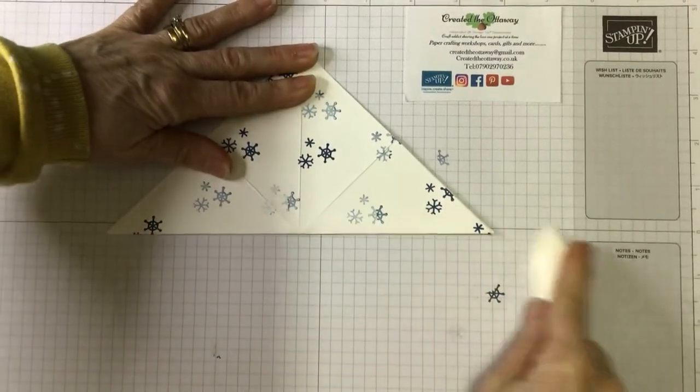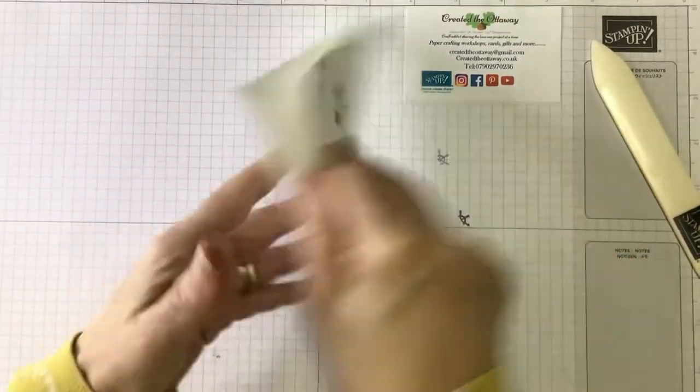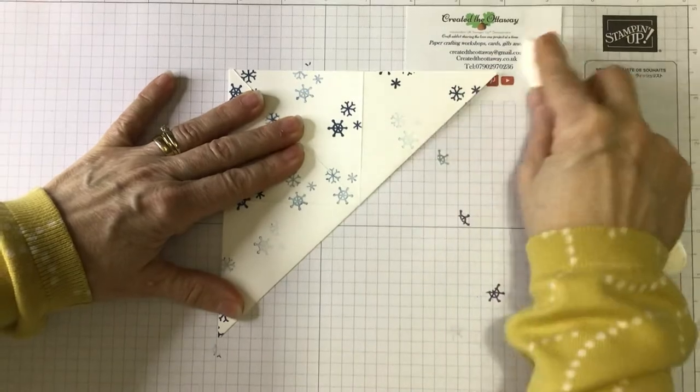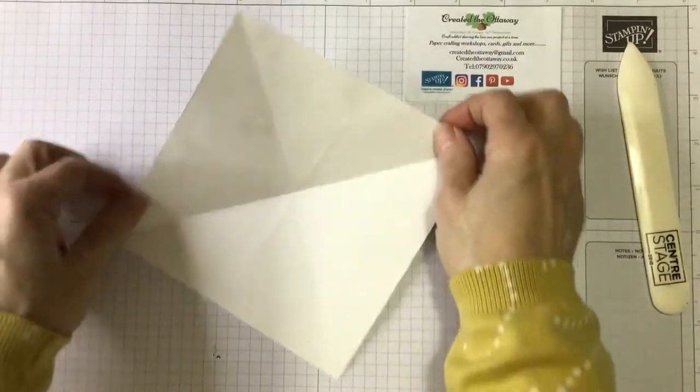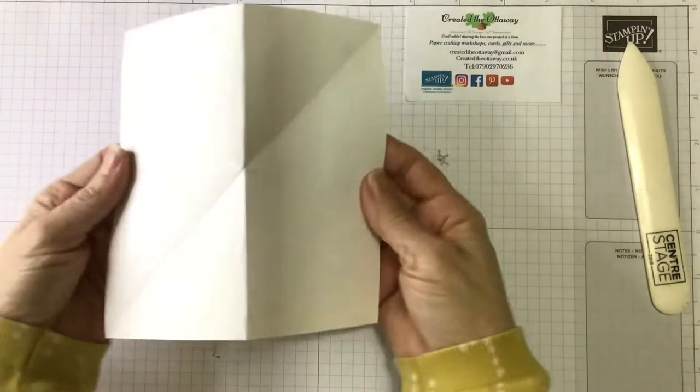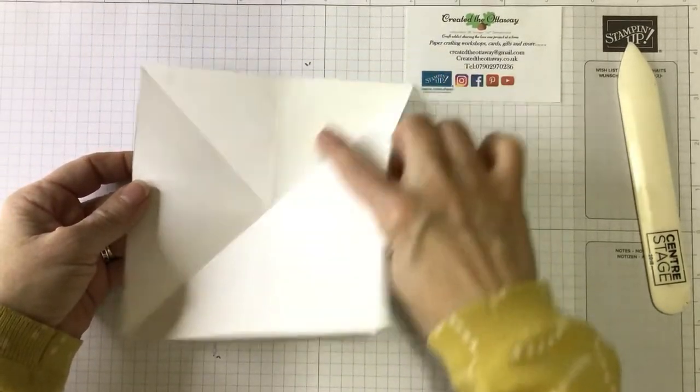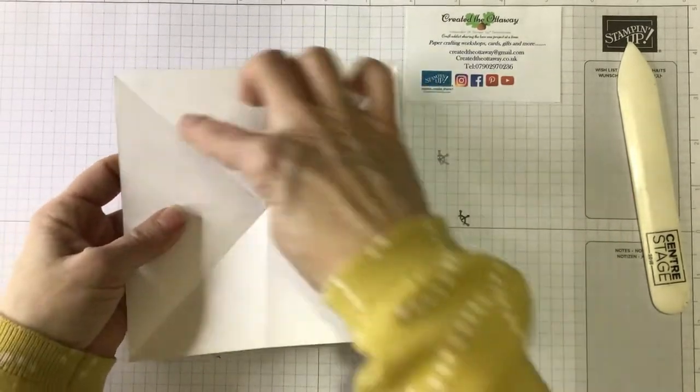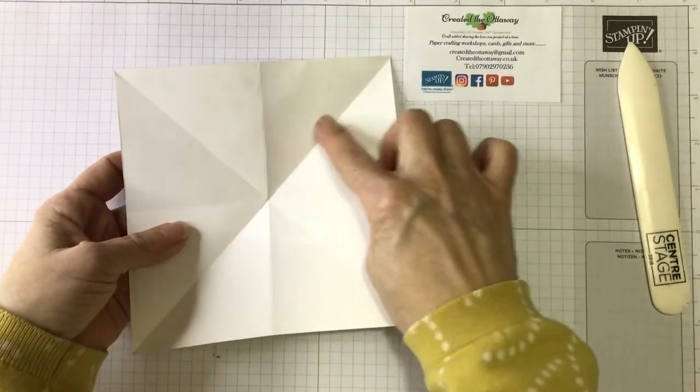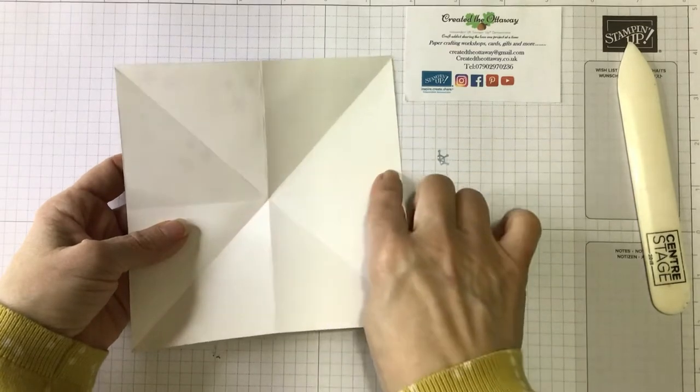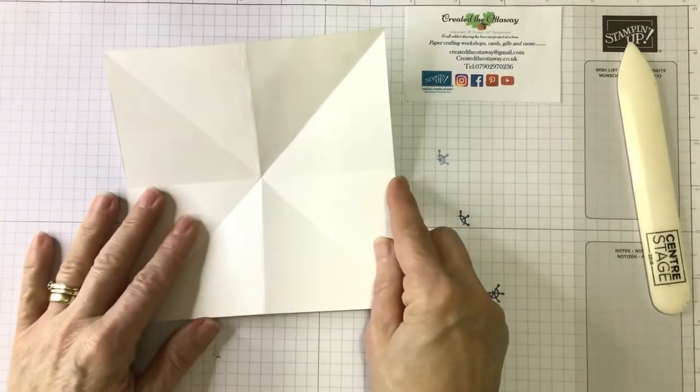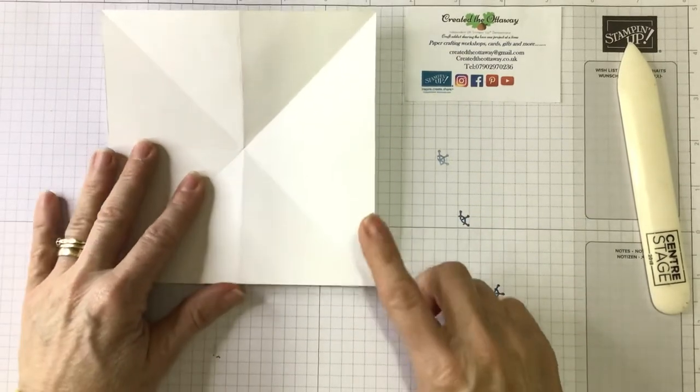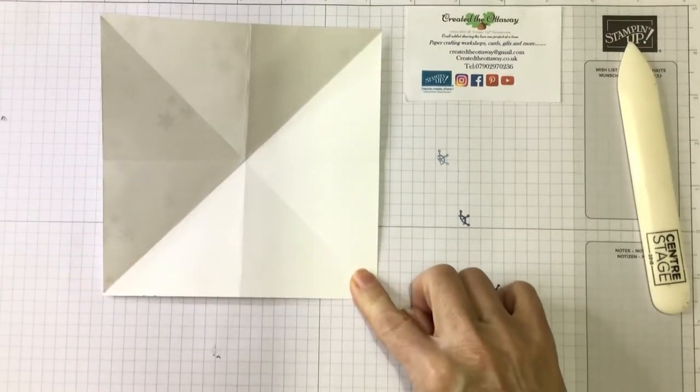So you could make this to suit your Christmas table decor. Stampin' Up have got some beautiful papers this year, so why wouldn't you use those? So when you open it out, you can see basically there's a line across in every piece. So it sort of cuts it into triangles. So that's got four triangles and that's got four triangles.